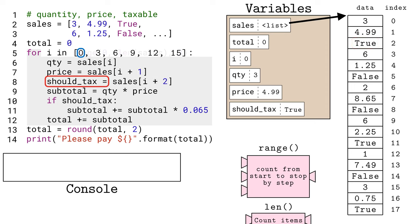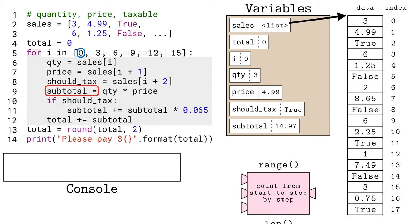Now that we have the three pieces of data for this first set of items being purchased, we can now compute the combined price of these items using multiplication. The result of this is saved to yet another variable, subtotal.